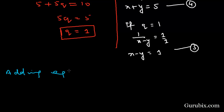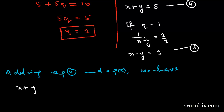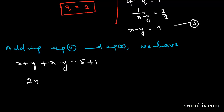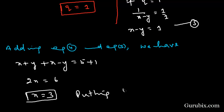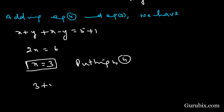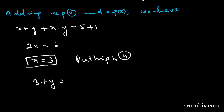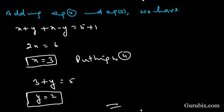Adding equation number 4 and equation number 5: x plus y plus x minus y equals 5 plus 1, so 2x equals 6, meaning x equals 3. Substituting x equals 3 into equation number 4: 3 plus y equals 5, so y equals 2. This is the solution of the question. Thank you.